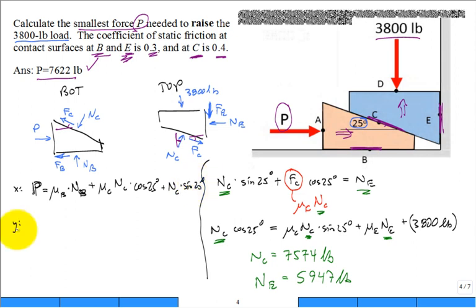The equilibrium in the y: we'll get N_B up, plus μ_C N_C times the sine of 25 degrees up on the surface C, and that's equal to N_C times the cosine of 25 degrees down. Sum of the forces in the y. I can then solve for N_B, so right away the y equation has one equation, one unknown, and so we get 5,584 pounds.